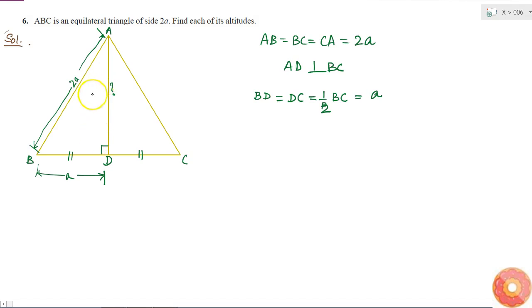I can see that triangle ADB, this triangle, is a right angle triangle. Here I have a perpendicular, so it is 90 degrees. So if ADB is a right angle triangle, then what can I say? I can apply the Pythagoras theorem.